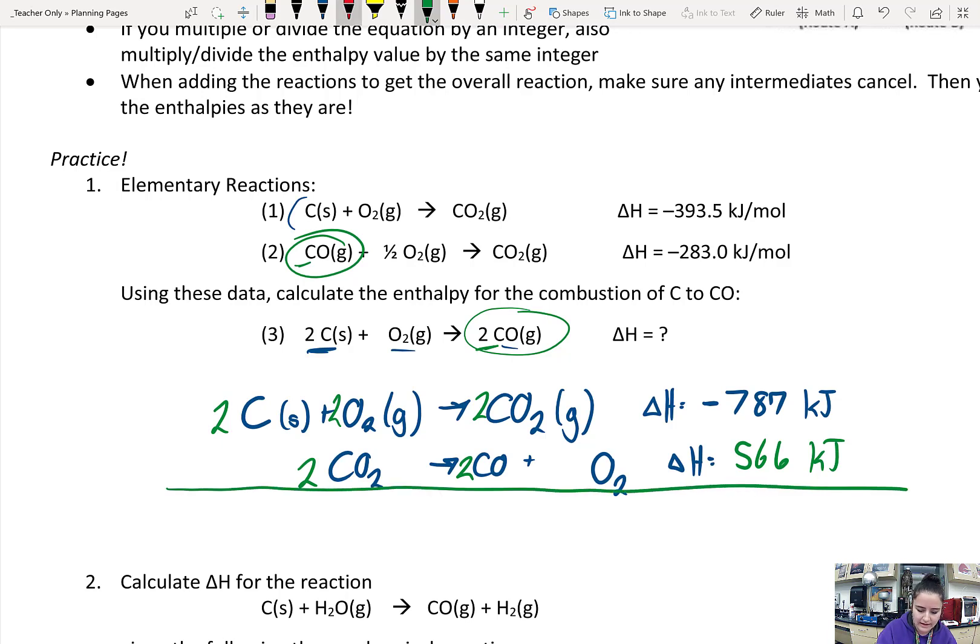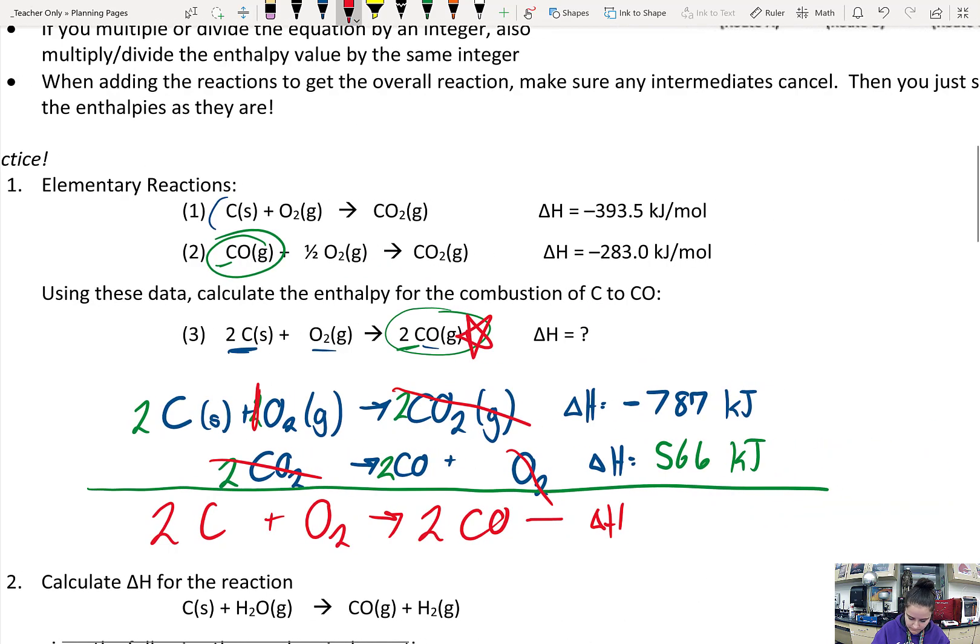And so now let's check and see if this works out. I have these two carbon dioxides canceling out with the two carbon dioxides there. I have one oxygen gas canceling out with just one of them, which makes sense because in my final reaction I have 2 carbon plus 1 oxygen gas forming 2 carbon monoxide, and it matches up with my target. So then I just add these up. Negative 787 plus 566 gives me negative 221 kilojoules as the delta H value for that reaction.